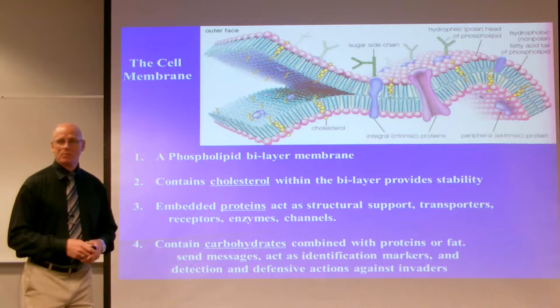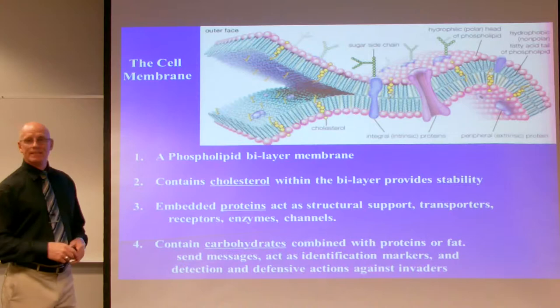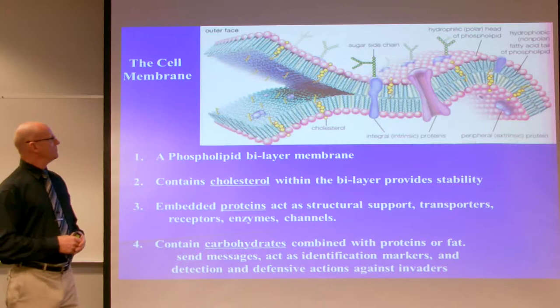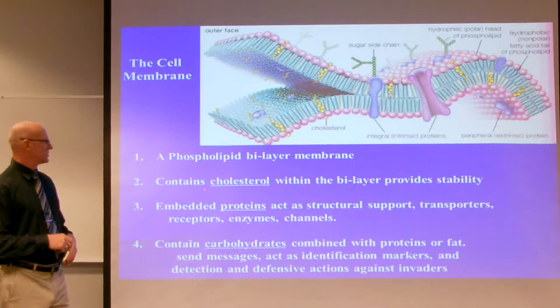The cellular membrane is a phospholipid bilayer membrane — it has two layers composed of phospholipids, with a phosphate head and two lipid tails. The heads are hydrophilic, meaning they love water, and the tails are hydrophobic, meaning they are afraid of water. This allows the cell to remain in an aqueous environment. The lipid bilayer also contains cholesterol within the cell, which provides stability.